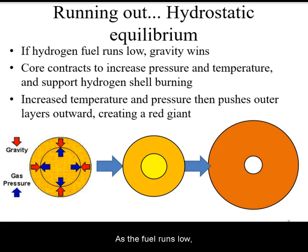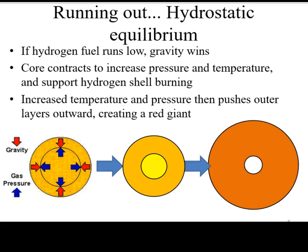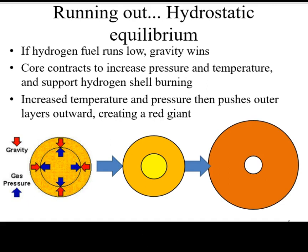As the fuel runs low, the core starts to shrink and heat up, and hydrogen burning moves to higher layers. This expands the outer layers into a red giant.